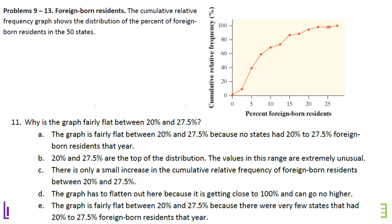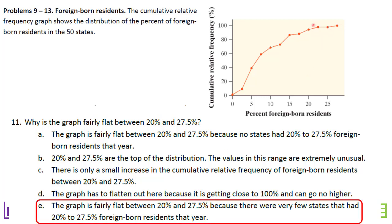Why is the graph fairly flat between 20% and 27%? Basically, there were very few states with that amount of foreign-born residents. Some might think it's because it's approaching 100%, but a graph can be steep near 100% — flatness means very little new data is accumulating. So there were very few states with 20% to 27.5% foreign-born residents.